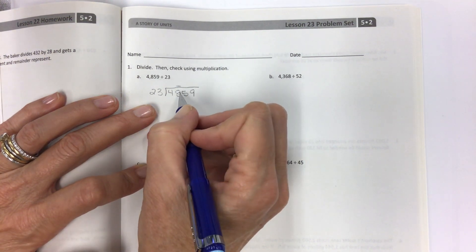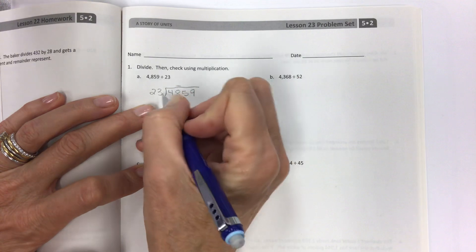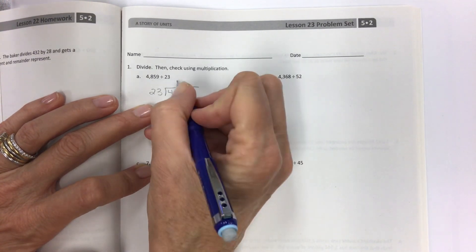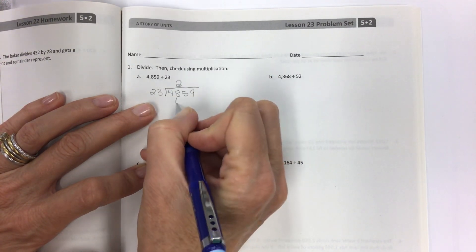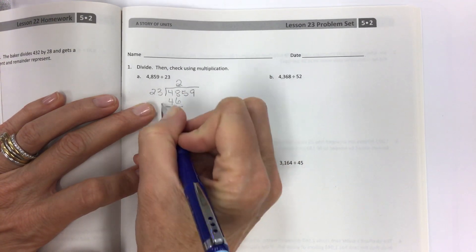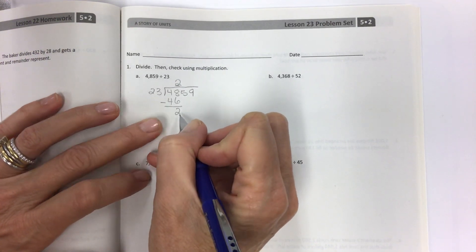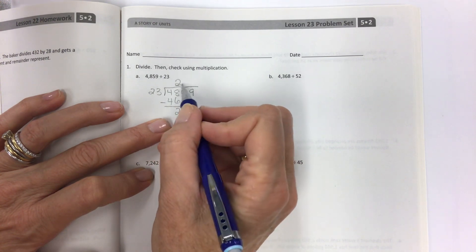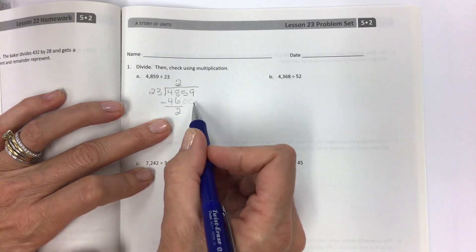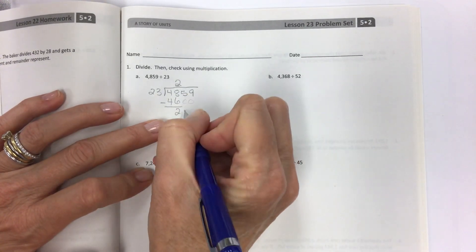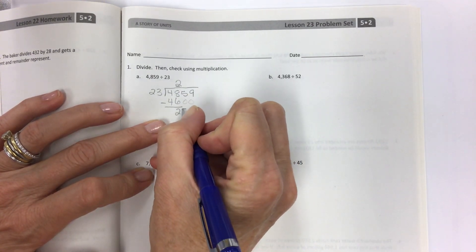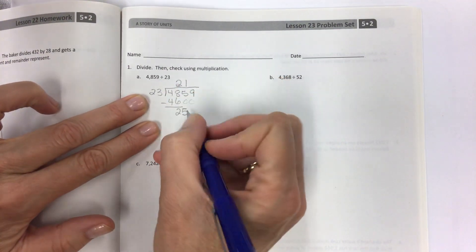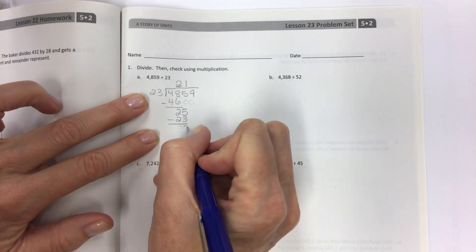How many 23s can I fit into 48? If you do some quick estimating in your head, 20, 40, I should be able to successfully fit two. Two times three is six. Two times two is four. Do your subtraction and you have two left over. Bring down the 5.